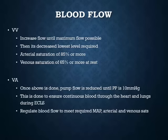Increase blood flow initially to maximum to assess what the circuit can handle and what pressures occur at maximal flow rate. Then decrease to the lowest effective level. Arterial saturations of 85% or more are acceptable on VV ECMO — saturations of 83–86% are all okay, partly due to the recirculation phenomenon. An SVO2 of 65% or more at rest is fine.